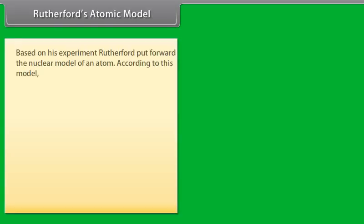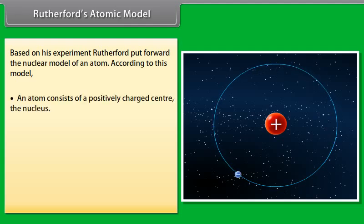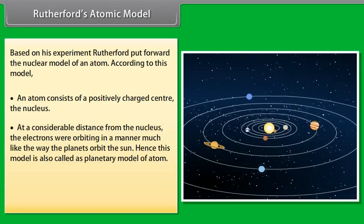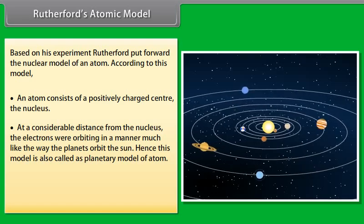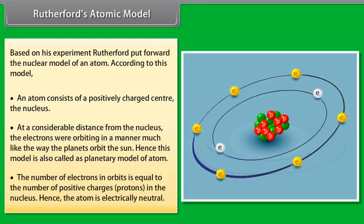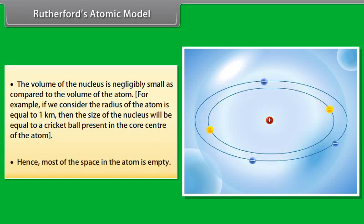Rutherford's Atomic Model. Based on his experiment, Rutherford put forward the nuclear model of an atom. According to this model, an atom consists of a positively charged center, the nucleus. At a considerable distance from the nucleus, the electrons were orbiting in a manner much like the way the planets orbit the sun. Hence, this model is also called as planetary model of atom. The number of electrons in orbits is equal to the number of positive charges, protons, in the nucleus. Hence, the atom is electrically neutral. The volume of the nucleus is negligibly small as compared to the volume of the atom. For example, if we consider the radius of the atom is equal to 1 km, then the size of the nucleus will be equal to a cricket ball present in the core center of the atom. Hence, most of the space in the atom is empty.